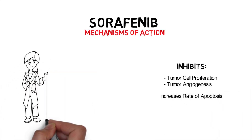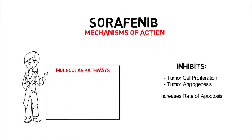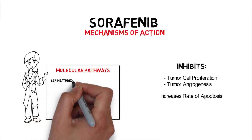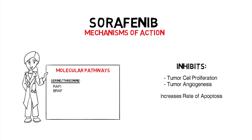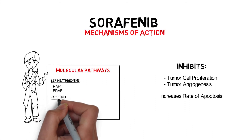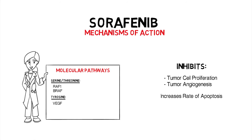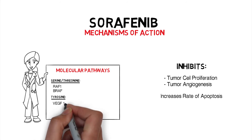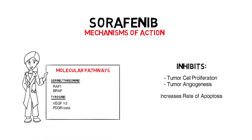Sorafenib inhibits tumor cell proliferation and tumor angiogenesis and increases the rate of apoptosis in a wide range of tumor models. It is a multi-tyrosine kinase inhibitor that acts by inhibiting the serine-threonine kinases RAF1 and BRAF, as well as the receptor tyrosine kinase activity of the VEGF receptors 1, 2, and 3, and the platelet-derived growth factor receptor beta.